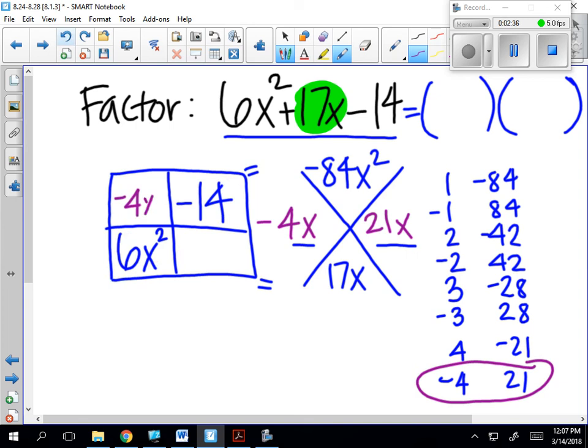I'm going to fill those into my generic rectangle and then find the dimensions, the length and the width. The greatest common factor between 4x and 6x is 2x. The greatest common factor between 21x and 6x is going to be 3x, and that works out because 3x times 2x is 6x². 2x times something equals negative 4x, that's negative 2. 3x times something equals 21x, that's 7.